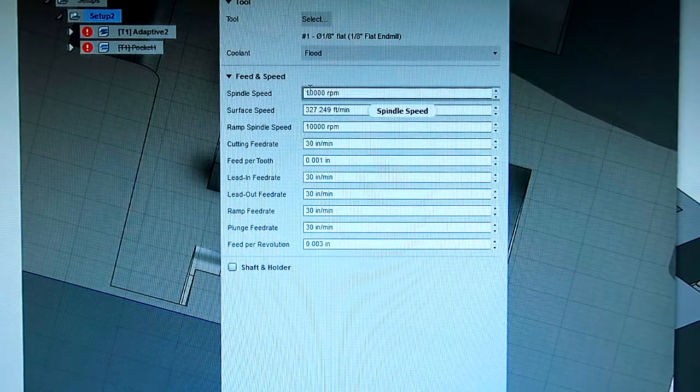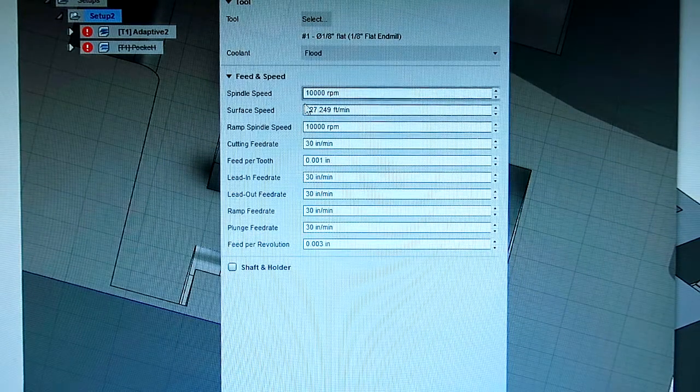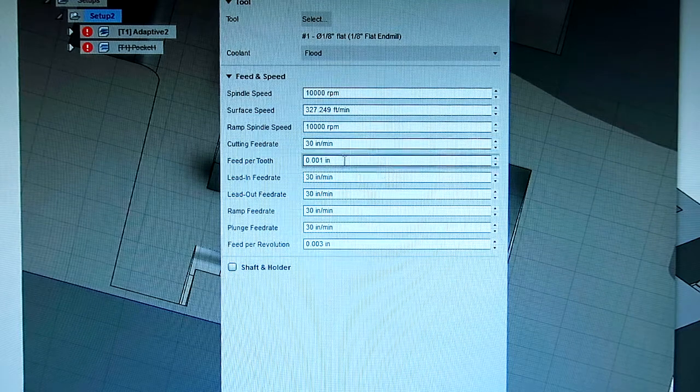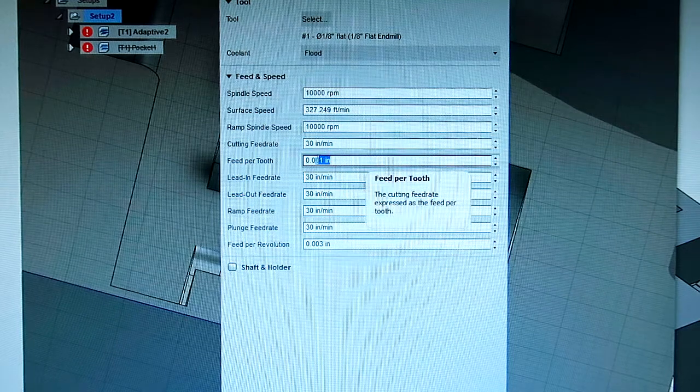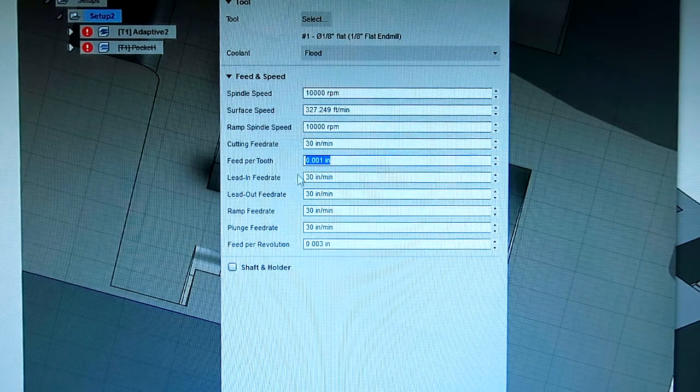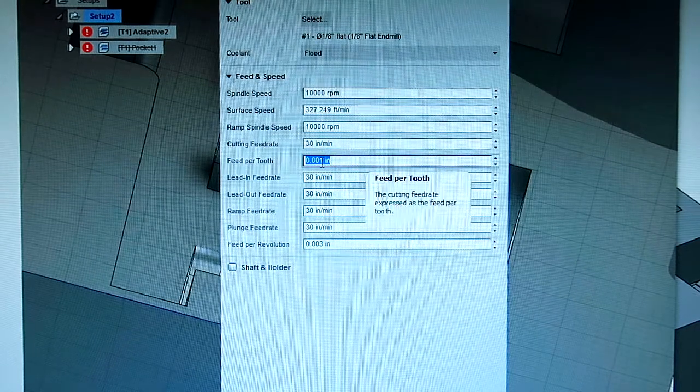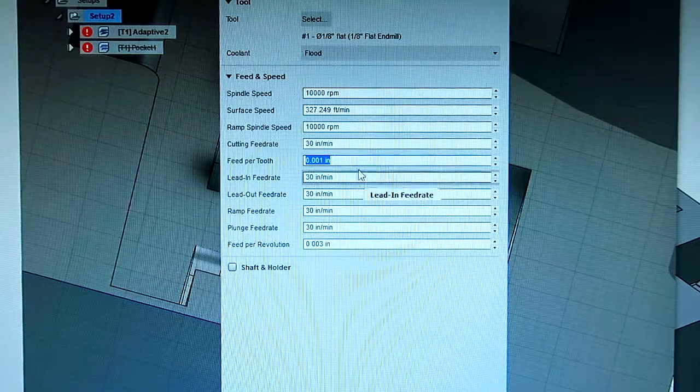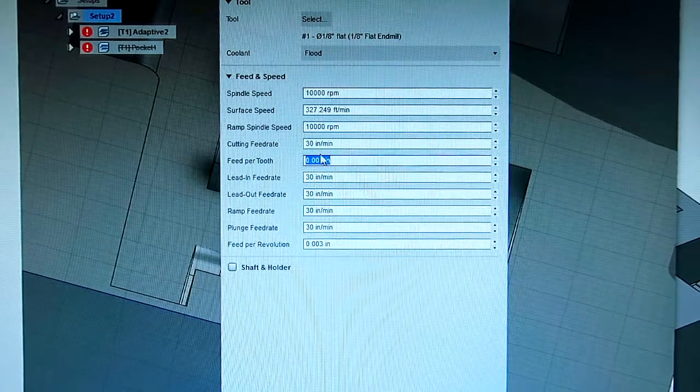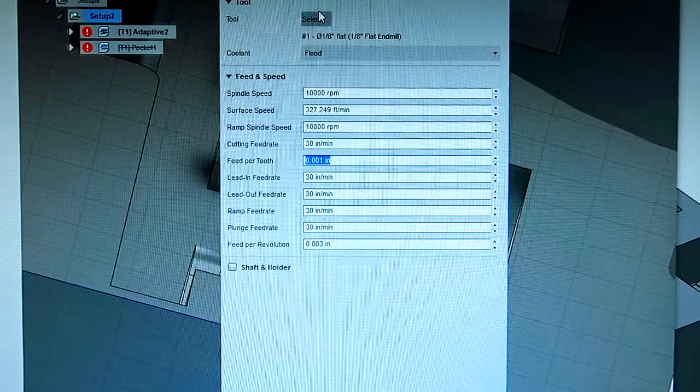So we plug in how fast the tool is going to turn, how fast it's going to ramp in, how fast it's going to cut. This right here in machining is really important. It's called Feed Per Tooth, and it's kind of a weird measurement, but it basically is a measure of how much stress you're putting on each tooth on the cutter. And each cutter specifies different specs for this, so that you get it off the datasheet for the cutter.